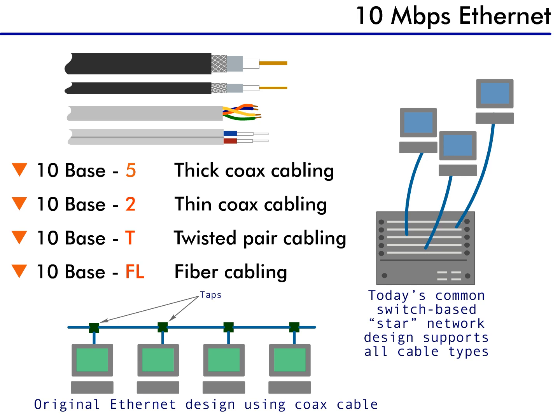Now that we've learned about the Ethernet packet, let's discuss the media used for Ethernet communication. The first implementation of Ethernet had a bandwidth of 10 megabits per second and operated over coax cabling. This was standardized as 10Base5. The 10 indicates the bandwidth, the Base stands for baseband, and the 5 stands for 500 meters, which is the maximum distance the cable will support without a repeater.